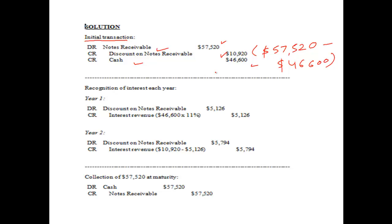Now we will recognize the interest each year. For year 1, the interest revenue will be credited with 11.1%, the implied interest rate, multiplied by the carrying value of the note. This comes out to $5,126.